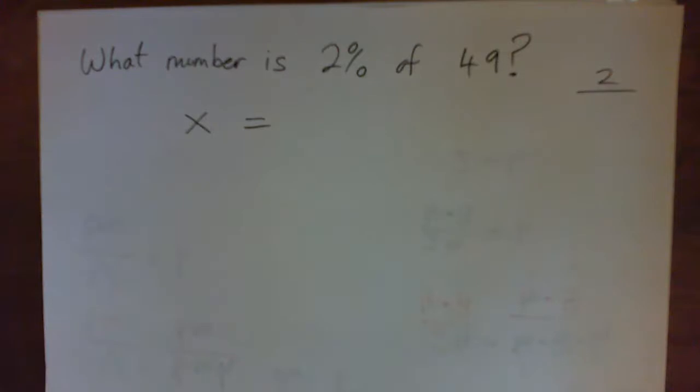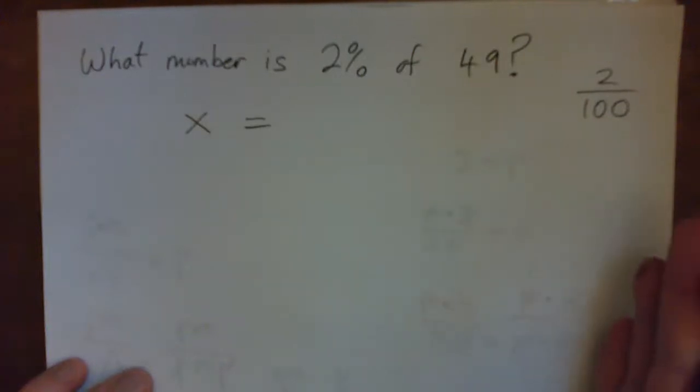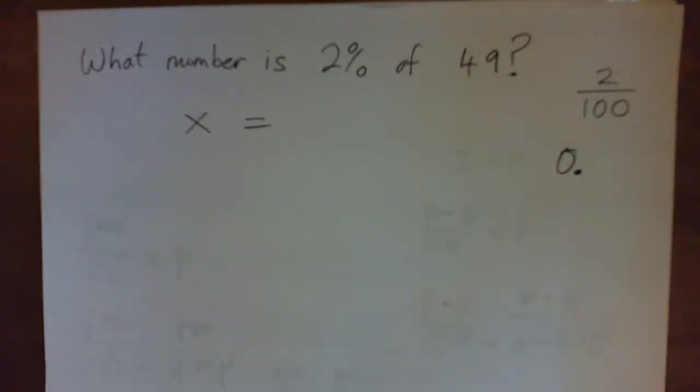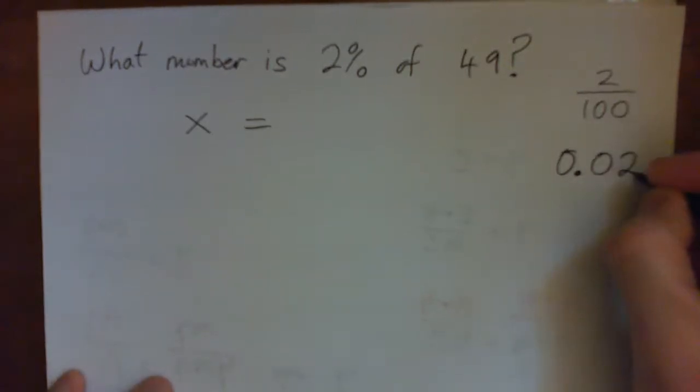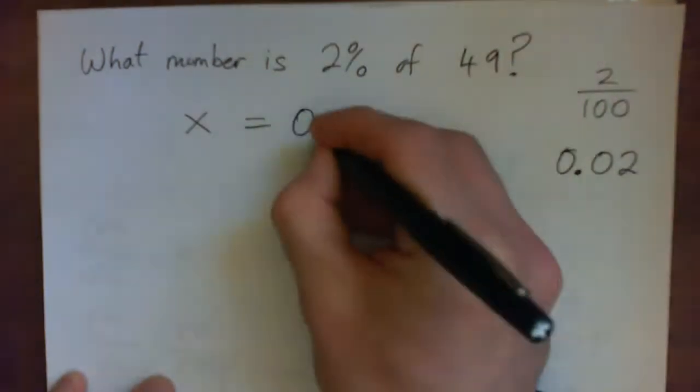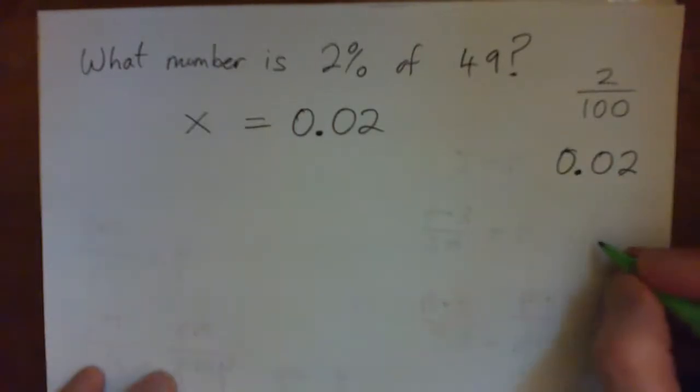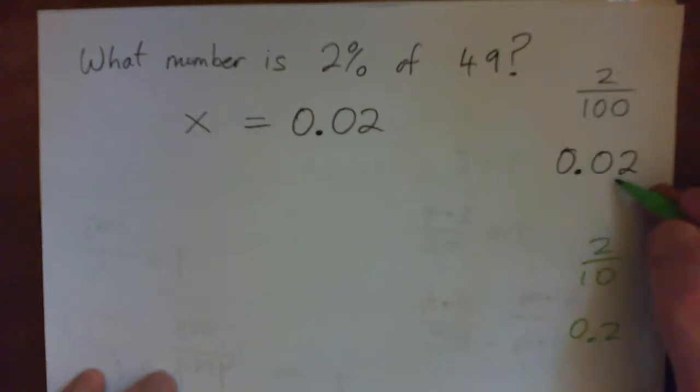2 hundredths. Now two hundredths gives us zero point zero two. That's what it is, it's zero point zero two, not zero point two. Common mistake is students say oh 2% is two-tenths or zero point two, that's not true at all. It's two hundredths or zero point zero two.